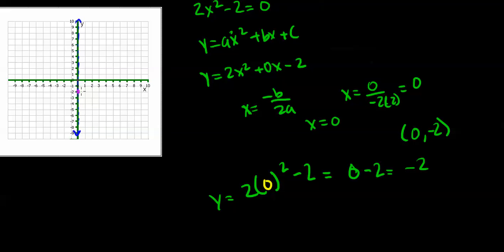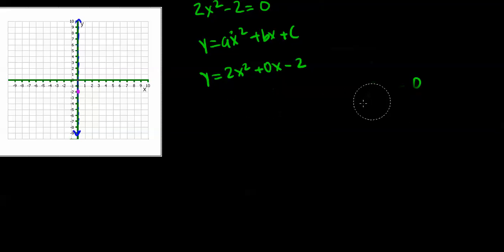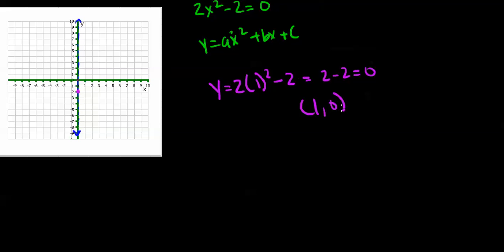Now we want to find two other points. We'll use x = 1 and x = 2. If we plug 1 into the original equation, we get y = 2(1)² - 2. Simplifying, we get 2 - 2 = 0. So we have the coordinate pair (1, 0). Let's plot that.